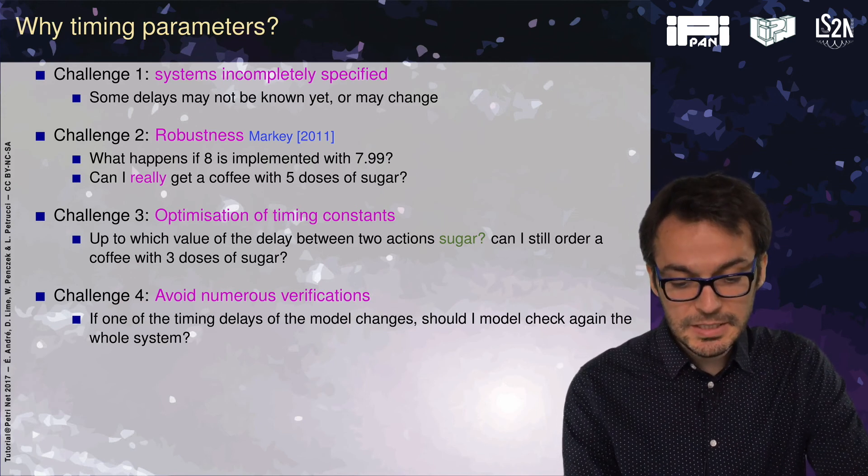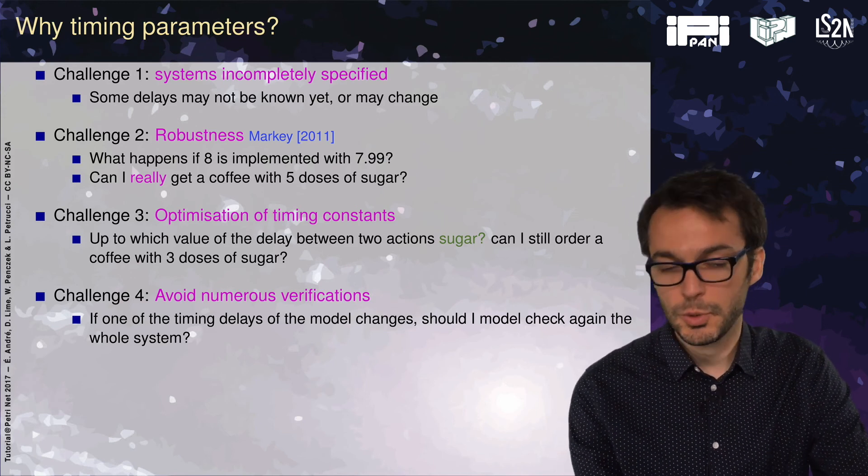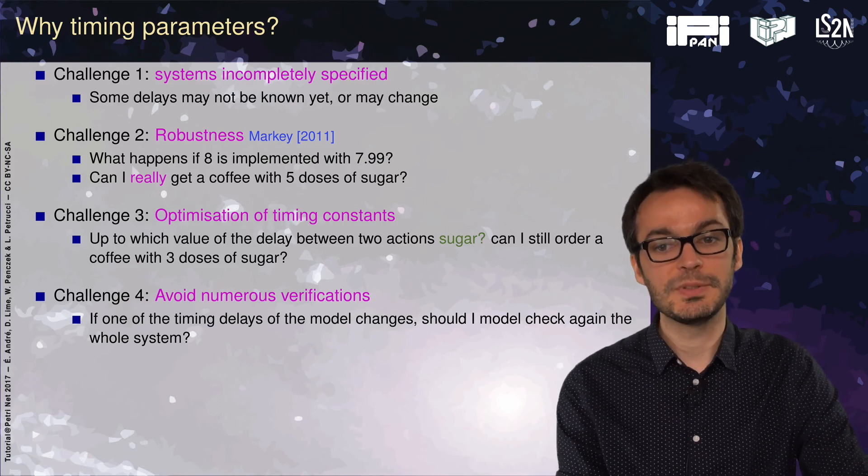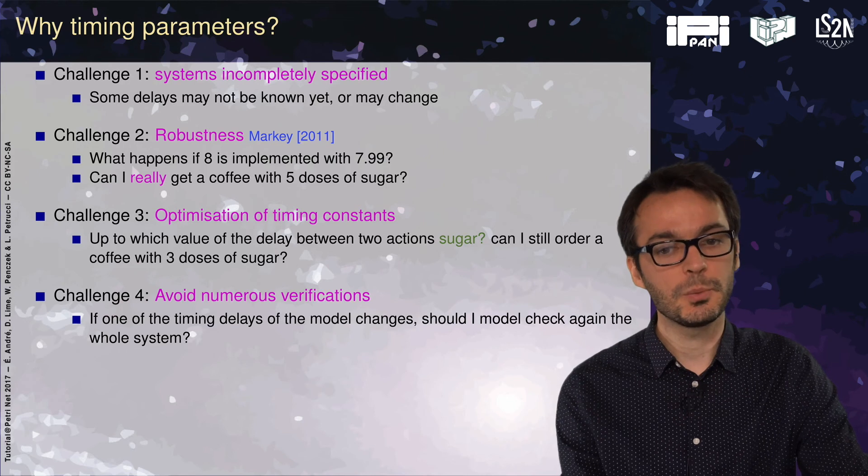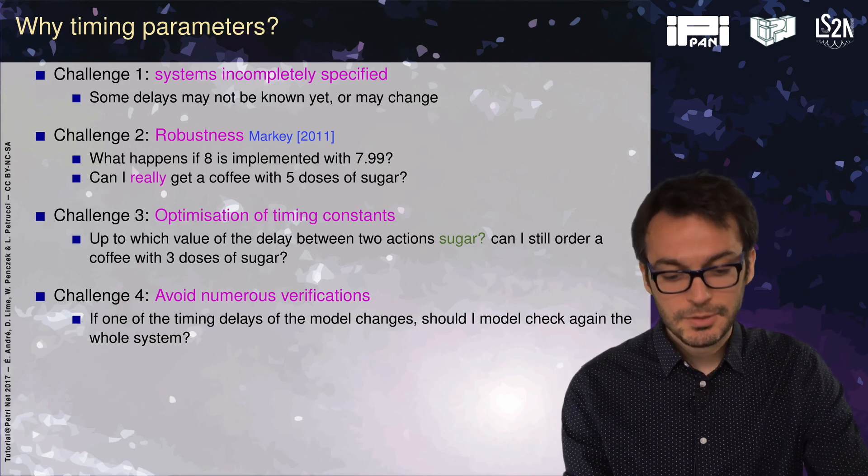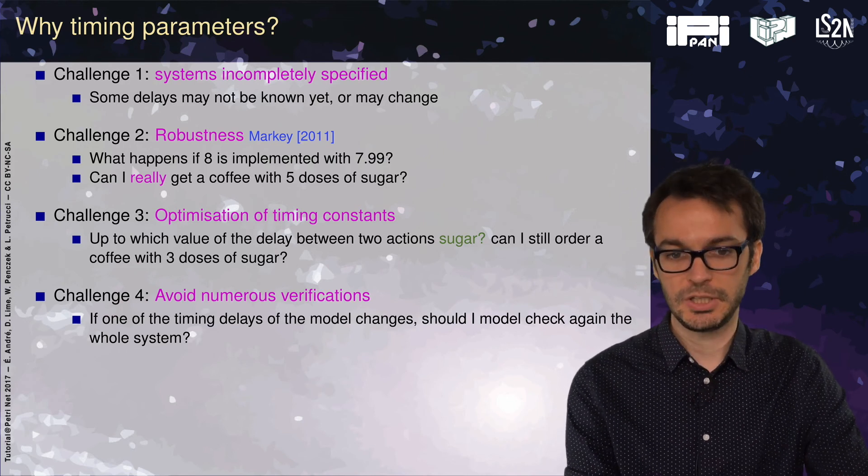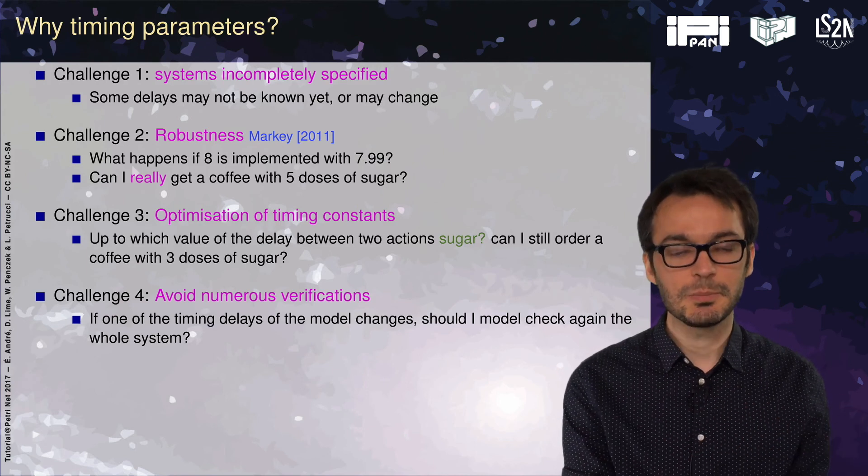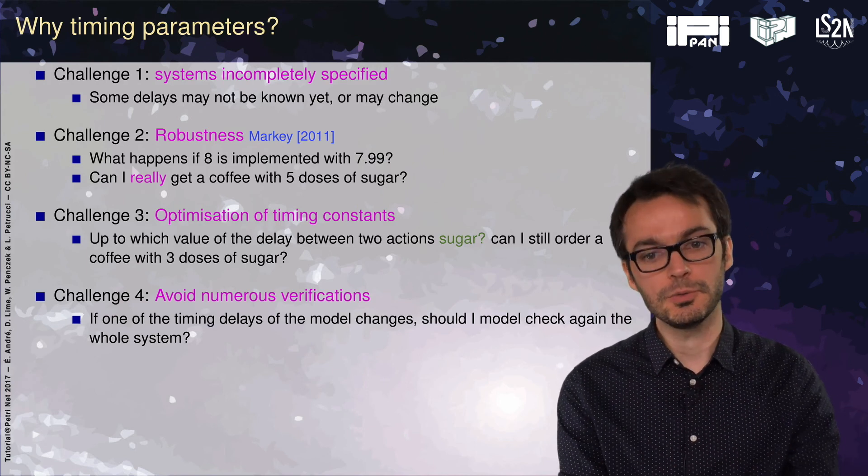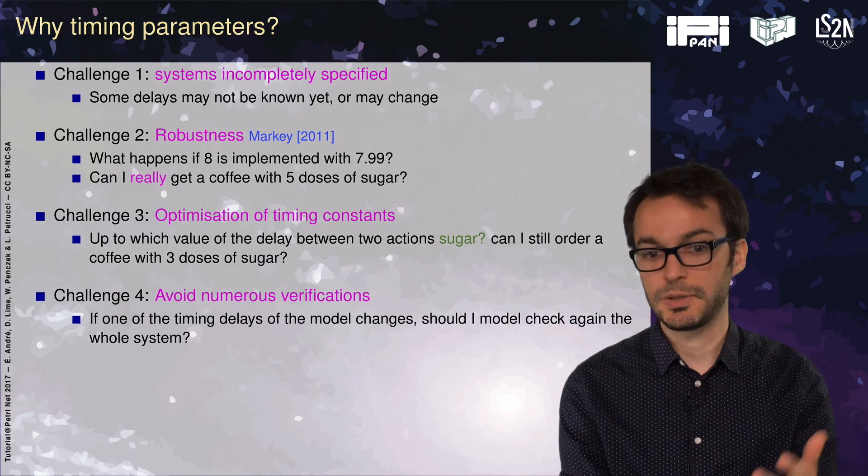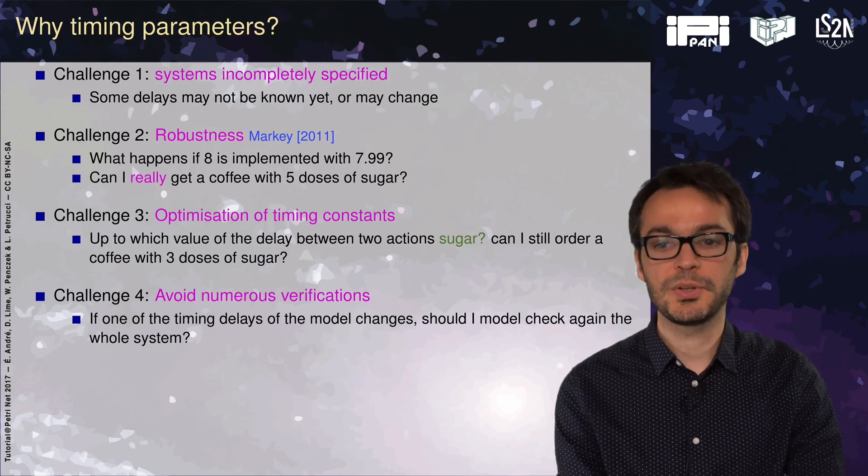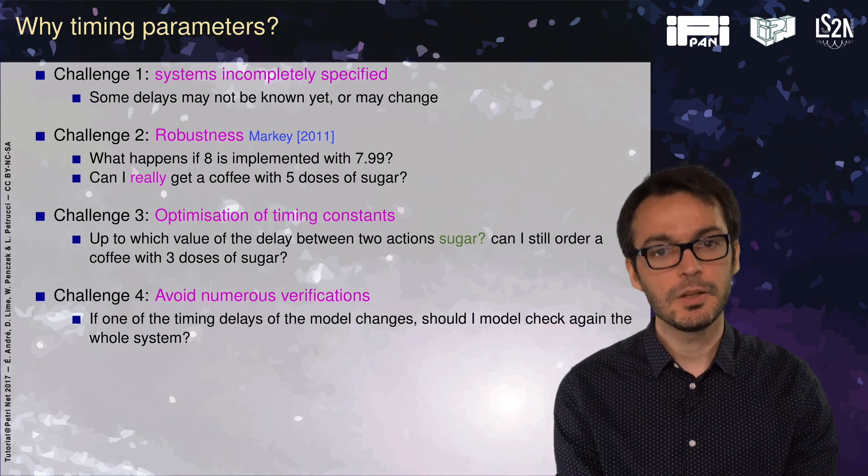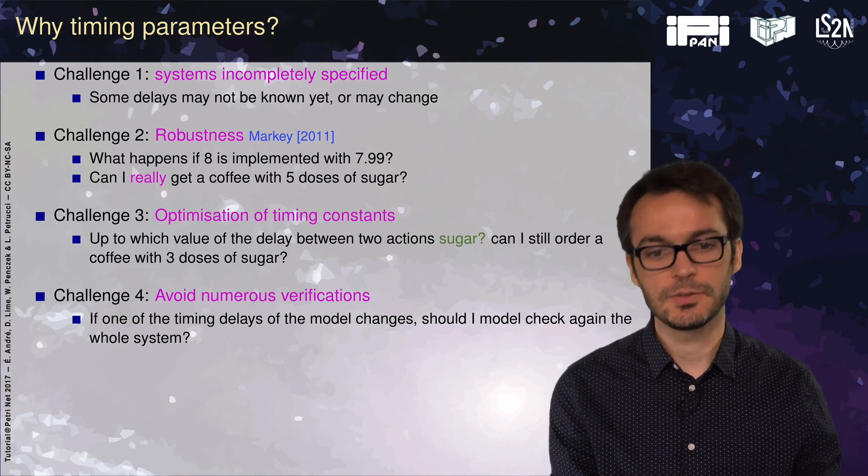A third challenge is the optimization of timing constants. A question could be up to which value of the delay between two sugar actions can I still order a coffee with three doses of sugar? The last challenge is to avoid numerous verifications. Sometimes we would like to check that the system is correct for many different values. If one of the timing delays changes, is the property still valid or should I model check again?